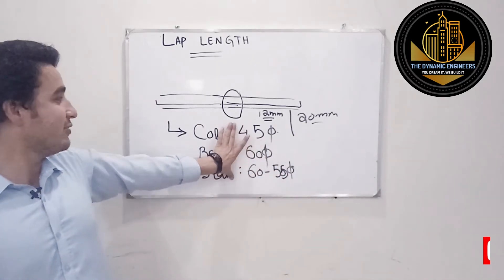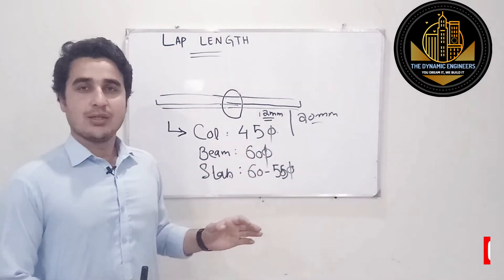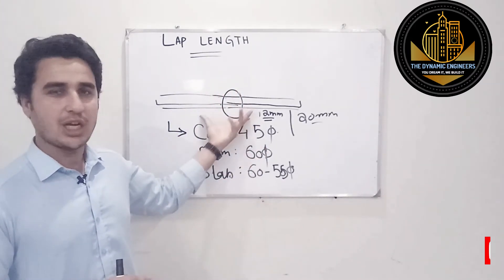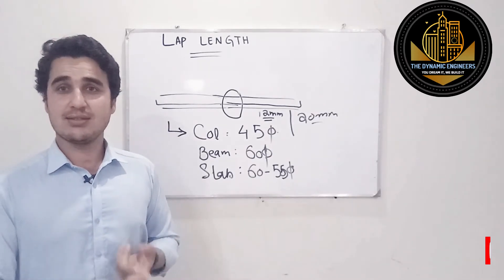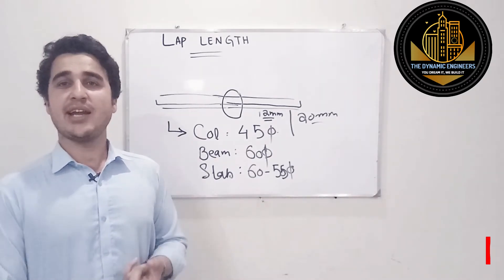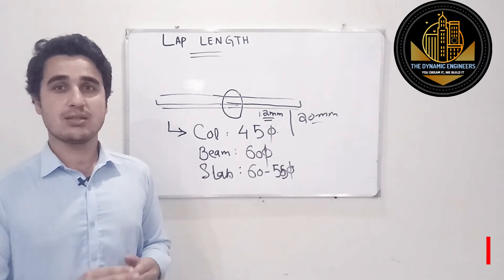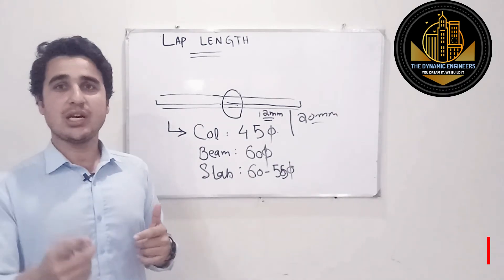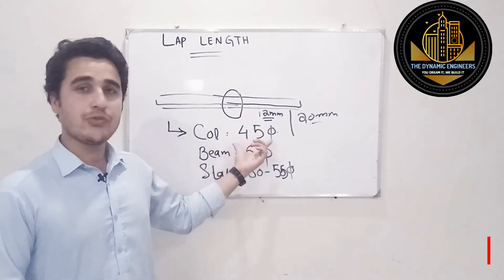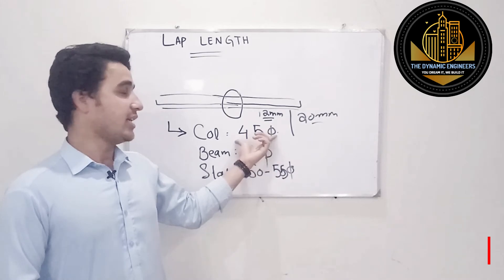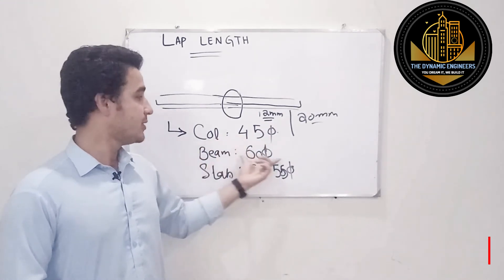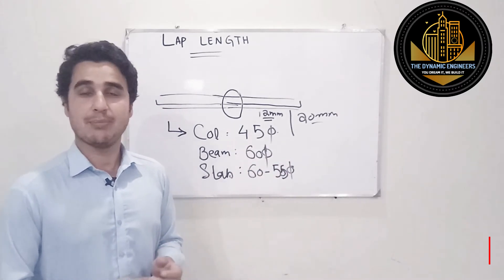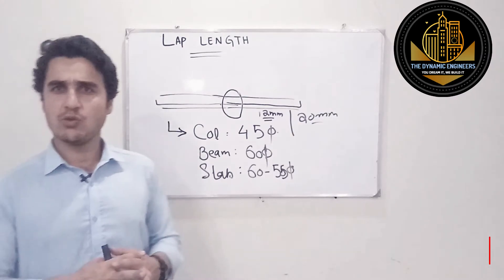So I hope you would have understood the concept of lap length - why do we need it and what are the thumb rules for lap length. IS (that is the Indian Standard) and ACI are providing us some formulas, but if those formulas are rounded off, then it will give us these values: 45D for column, 60D for beam, and 55 to 60D for slab.